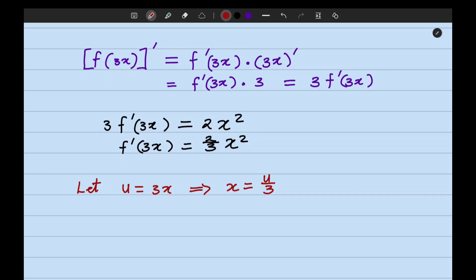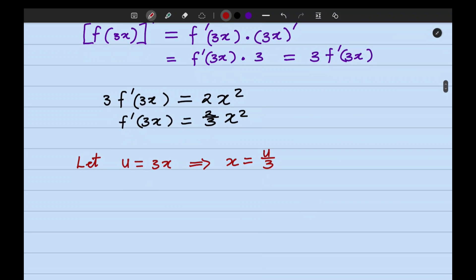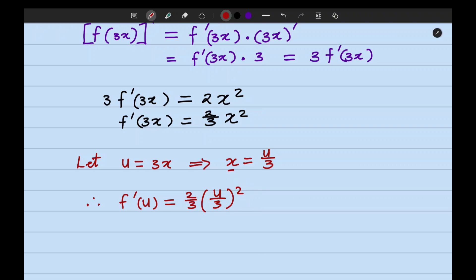Now, instead of writing 3x as the argument of this derivative expression, we're going to just plug in u. Therefore, f prime of u will be equal to 2 over 3 times x squared. But instead of writing x squared, I'm going to replace x with u over 3. So it's going to be u over 3 squared.